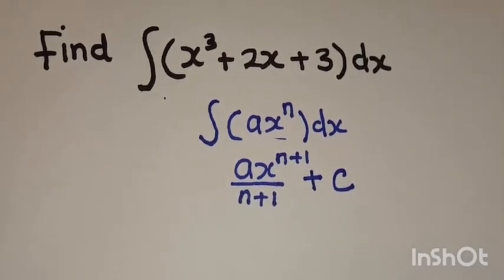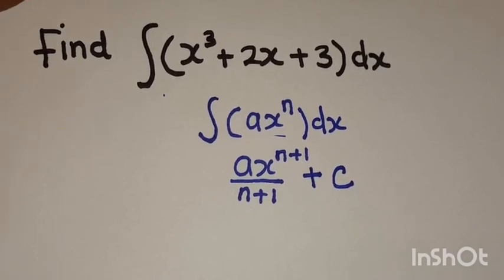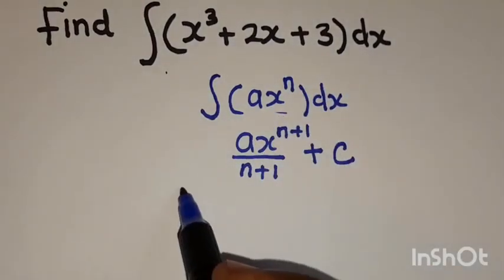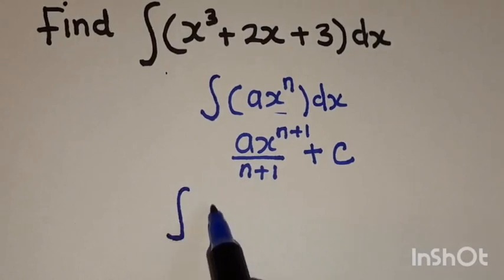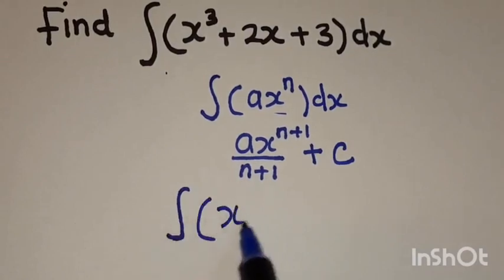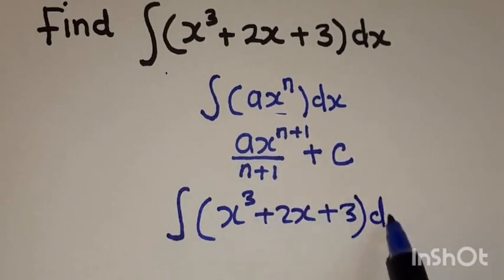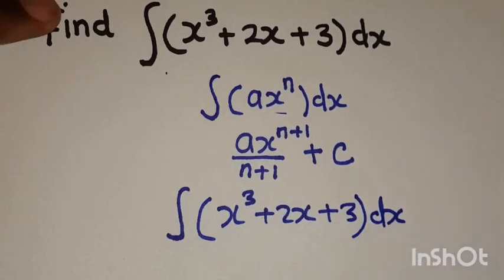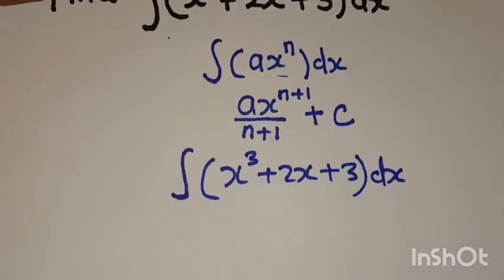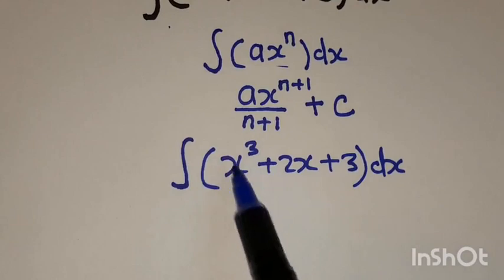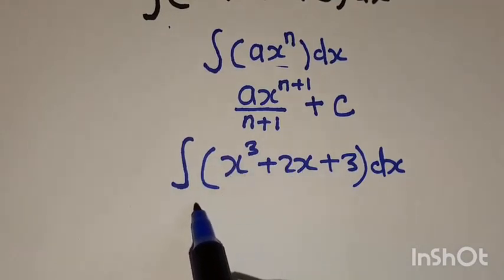Okay, so now coming back to our integral. We are told to integrate this function, x cubed plus 2x plus 3 with respect to x. The dx means you are integrating the function with respect to x. For us to integrate this function, first of all, let's rewrite it in this form.